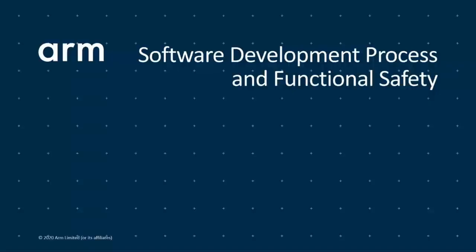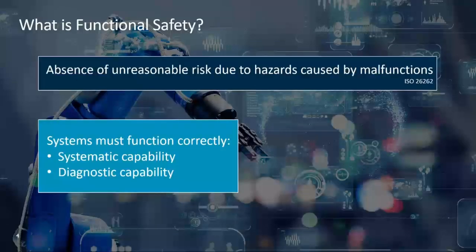Let's start with a closer look at the software development process and functional safety in general. What does functional safety actually mean? The ISO 26262 gives an easy answer to that. How can we ensure that systems function correctly? The products must be properly specified and developed accordingly, and faults must be detected and controlled.